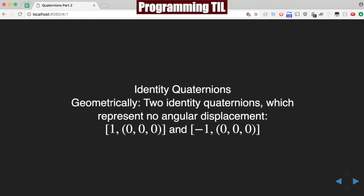So, identity quaternions. Geometrically, we'll have two of them, which will represent no angular displacement. We'll have [1, 0, 0, 0] and [-1, 0, 0, 0]. Recalling that this is wxyz, where w is represented by cosine theta over 2, and these are each by n and then sine theta over 2 xyz. So, y sine theta over 2, and z sine theta over 2.